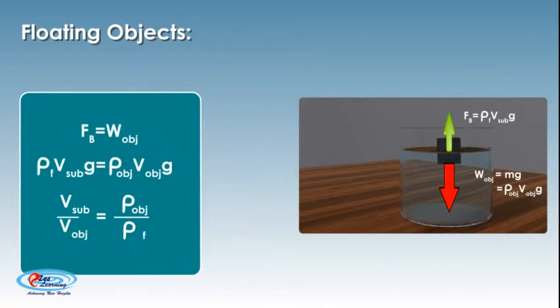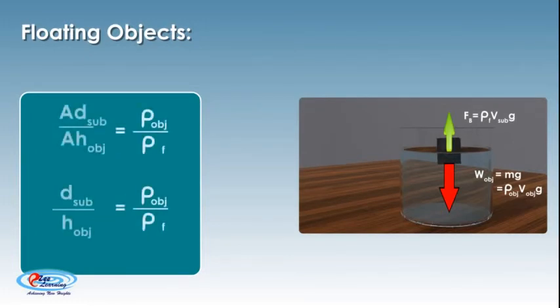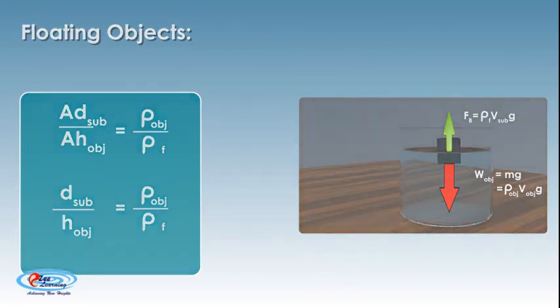For objects with a vertical wall around the outside such as a rectangle, we can reduce the above equation even farther. Area density submerged by area height of object equals density of object by density of fluid. Density submerged by height of object equals density of object by density of fluid.